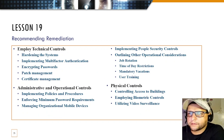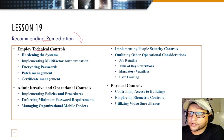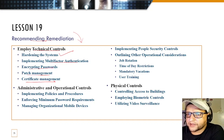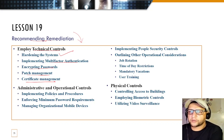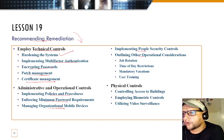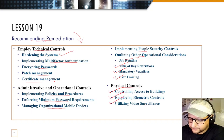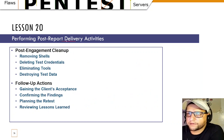Lesson 19 covers recommending remediation — providing technical controls, hardening systems, implementing MFA, encrypting passwords, patch management, certificate management, and suggesting policies and procedures. This includes enforcing minimum password requirements, managing mobile devices, implementing personnel security controls, and operational considerations such as job rotation, time-of-day restrictions, mandatory vacation, and user training. Physical controls include building access control, biometric controls, and video surveillance.